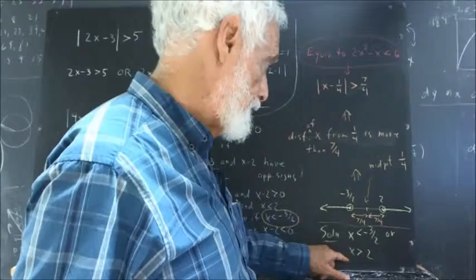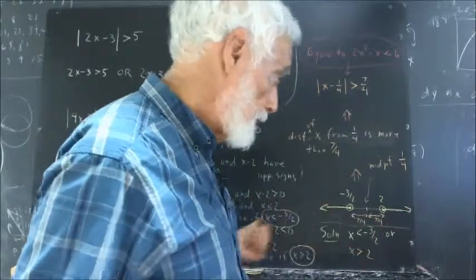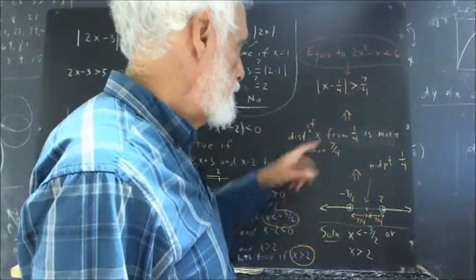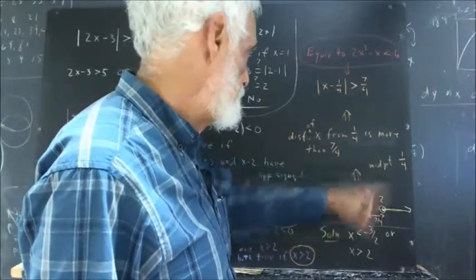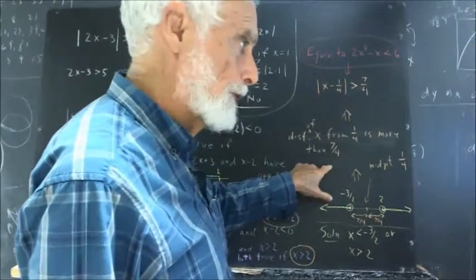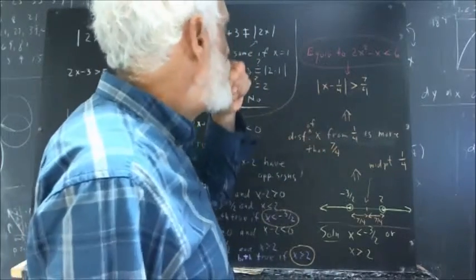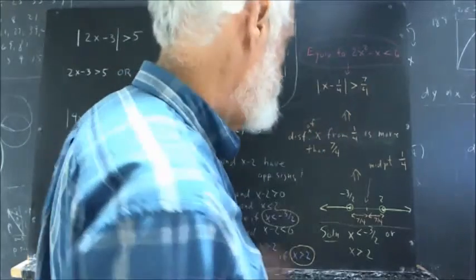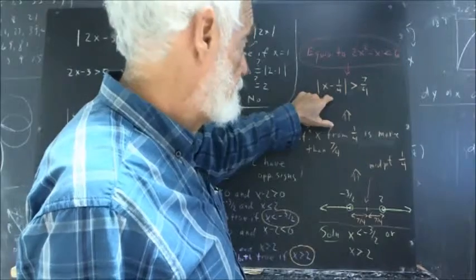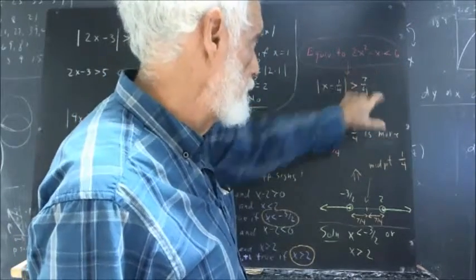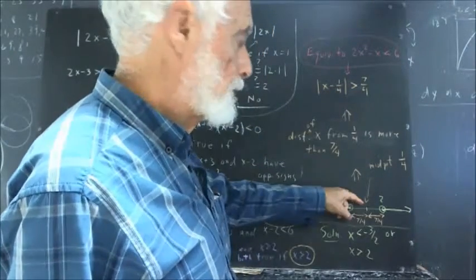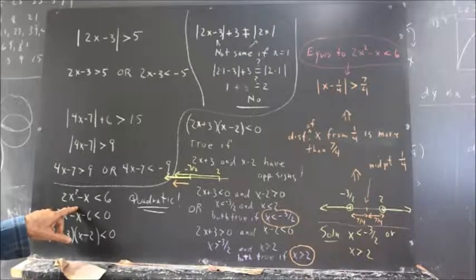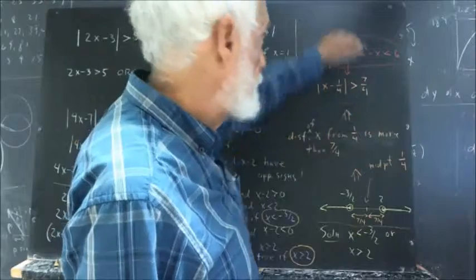If x satisfies the solution — lying in either arrow region — then x lies more than 7 fourths of a unit from the midpoint 1 fourth. The distance from x to 1 fourth is the absolute value of x minus 1 fourth. So the condition becomes: the absolute value of x minus 1 fourth is greater than 7 fourths. This absolute value inequality describes the same solution set as the original quadratic inequality.